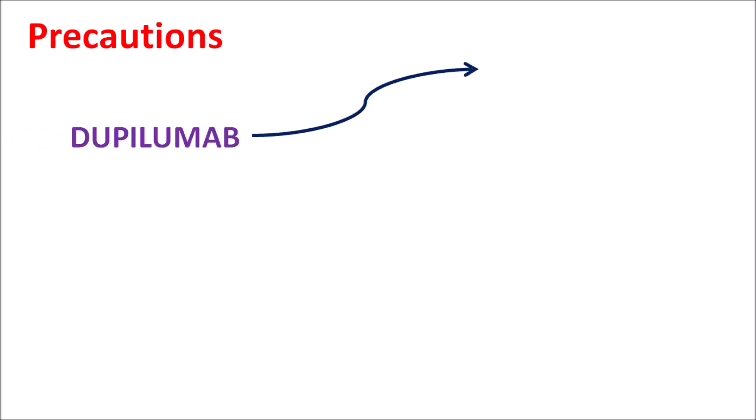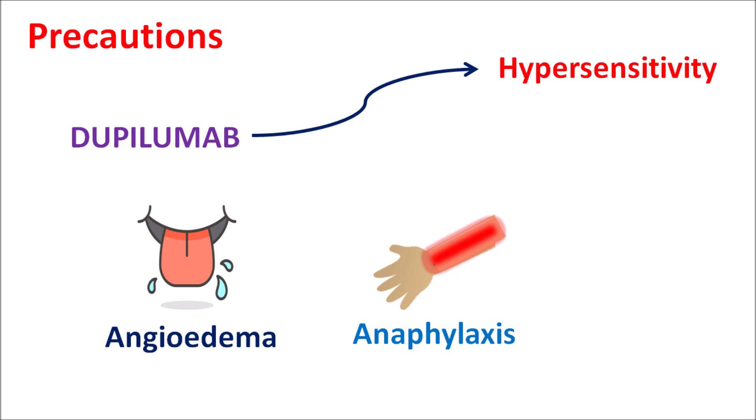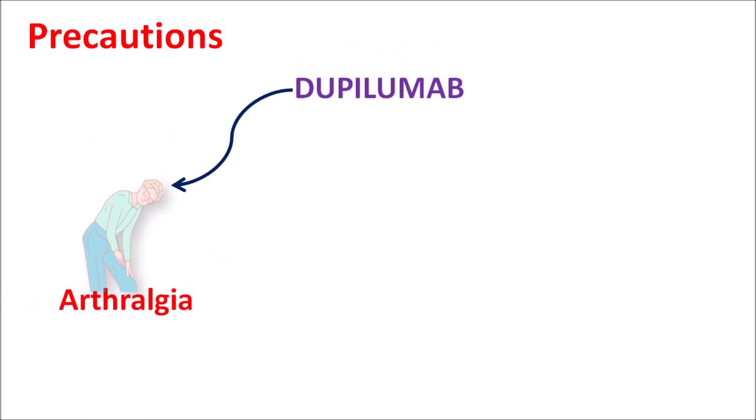Just like many monoclonal antibodies, dupilumab can also produce hypersensitivity reactions. Severe hypersensitivity reactions may be observed, and it may also result in angioedema and anaphylaxis. In case of any severe systemic hypersensitivity reactions, this drug should be withdrawn. In some people, dupilumab can produce arthralgia — joint pain. So in people with pre-existing joint disorders, this drug should be used carefully.